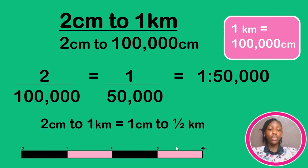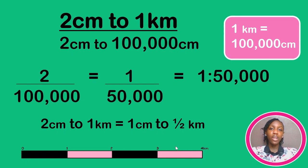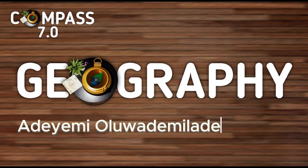Just something to note: one centimeter to one kilometer is actually a larger scale than one centimeter to two kilometers — some may find this surprising. This will be explained when we discuss map reduction and map enlargement, which will make things much clearer. And with that, we come to the end of the first part of this video on map scale. In the next video, we'll be working through past questions from WAEC and NECO to better improve your understanding. Stay tuned.